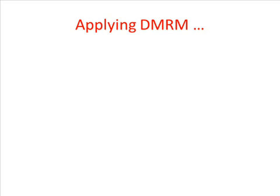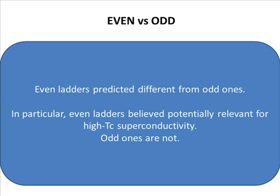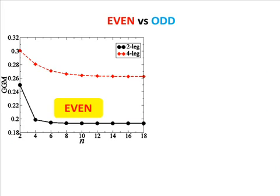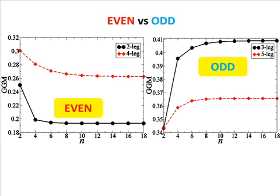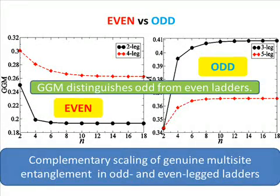We are now ready to show how DMRM can be applied in a physically important situation. In the literature, it is predicted that even-legged ladders are different from odd-legged ones in several ways. Using DMRM, we evaluate and compare the GGM for these two categories of quantum spin ladders. We find that for even-legged ladders, the GGM monotonically decreases to a saturation value. It does exactly the opposite for odd-legged ones. We therefore have a complementary scaling of GGM in these two categories, and the GGM is able to distinguish between these two types of ladders.